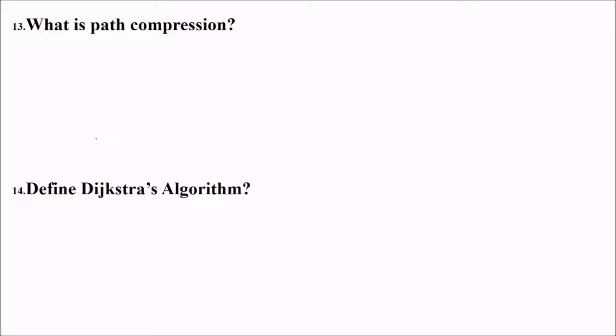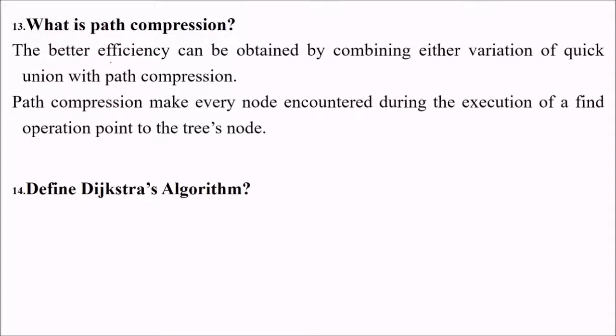What is path compression? You can achieve better efficiency by combining variation of quick union with path compression. This path compression makes every node encountered during the execution of a find operation point to the tree's root.